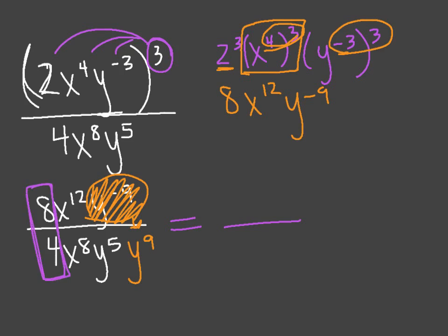Remember, the whole numbers, you just do whatever symbol is in between them. If there's a multiplication symbol in between them, you multiply the two numbers. If there's a division symbol in between them, you need to divide the two numbers. So 8 divided by 4 would give me 2. And I put that on the top of my fraction because that's where the bigger number was.